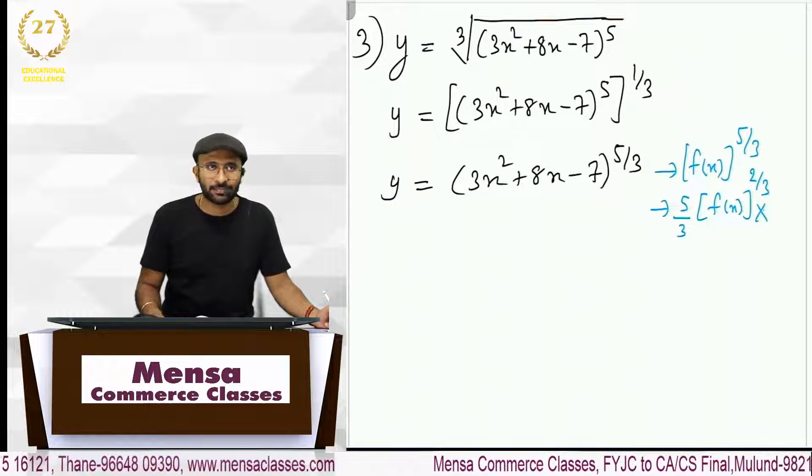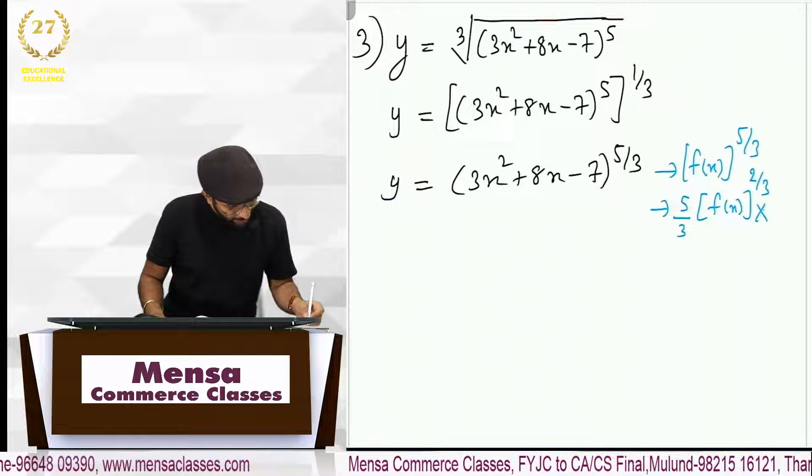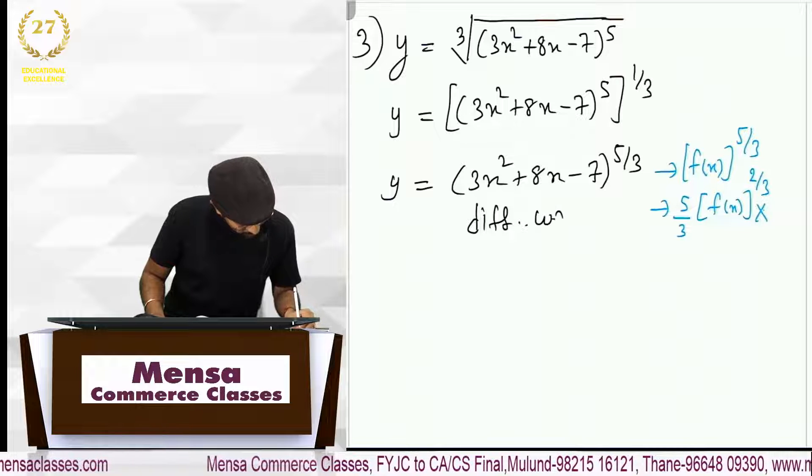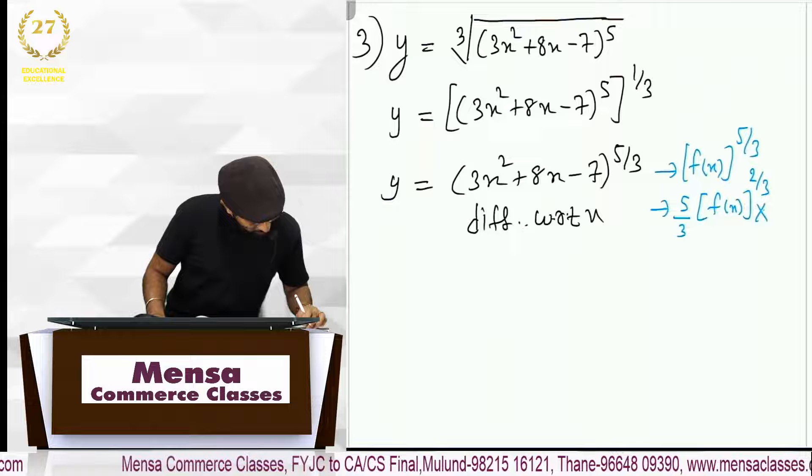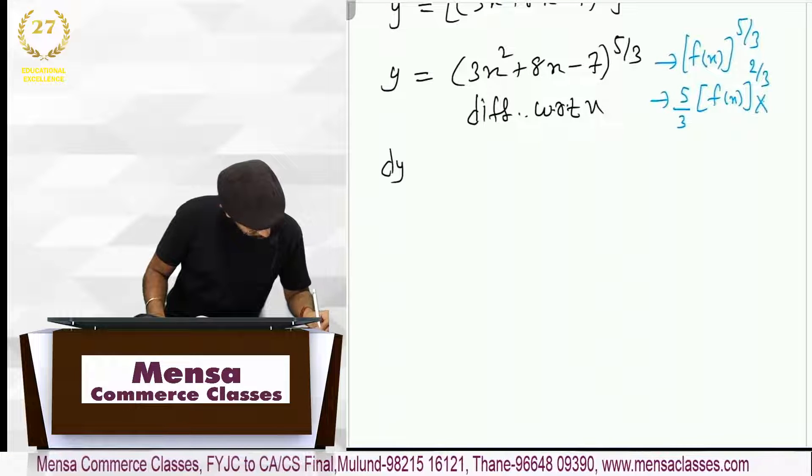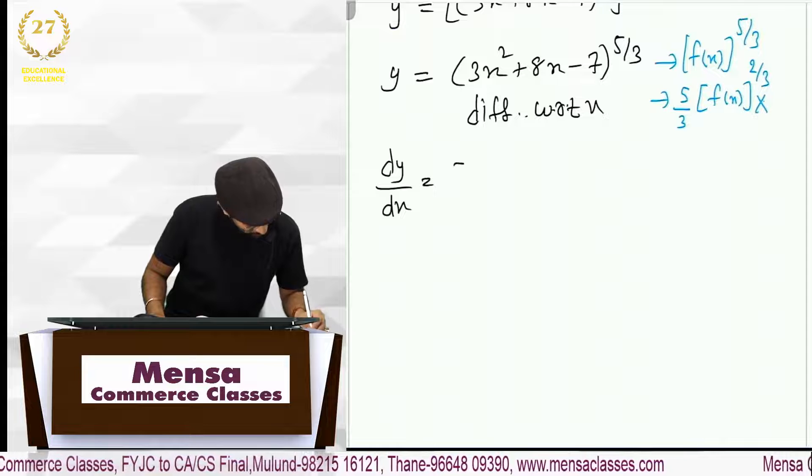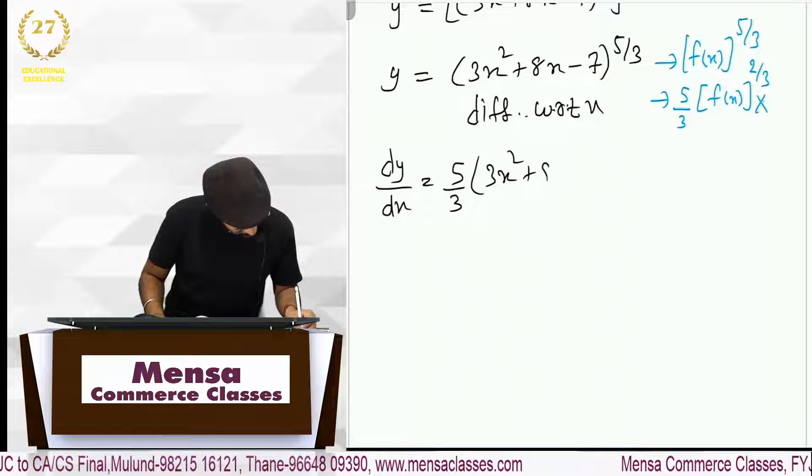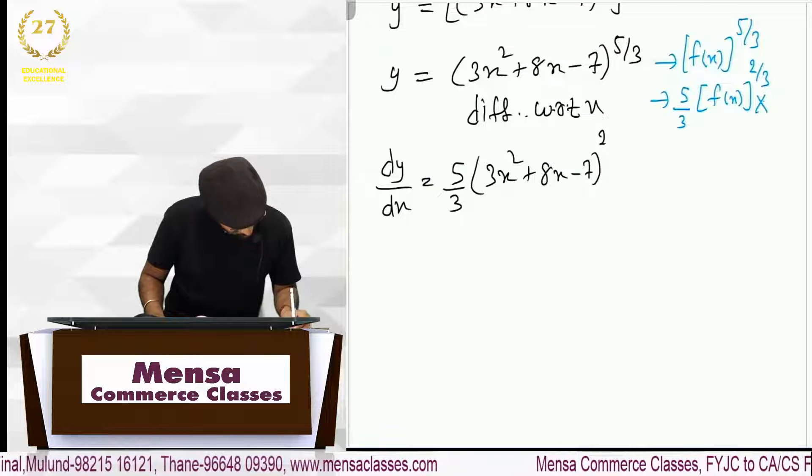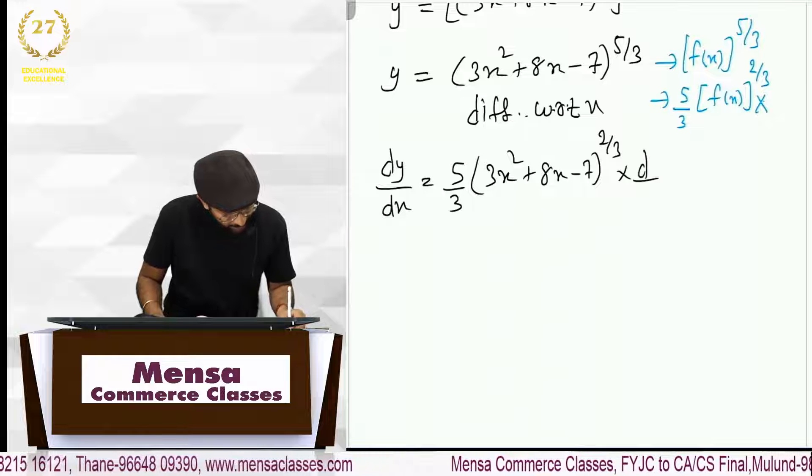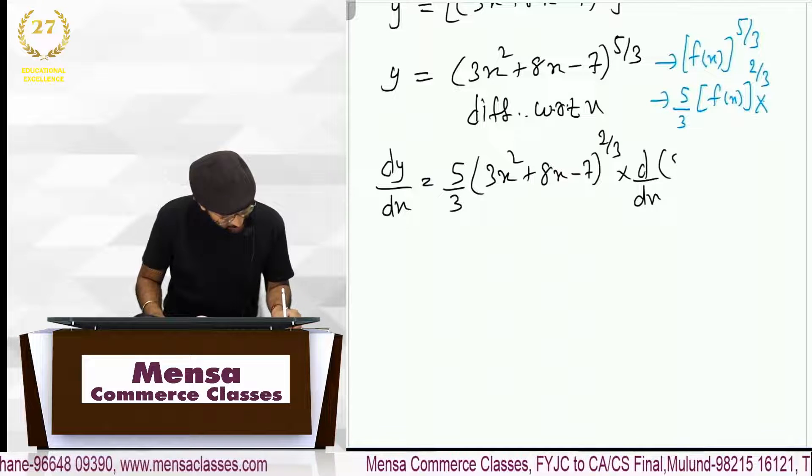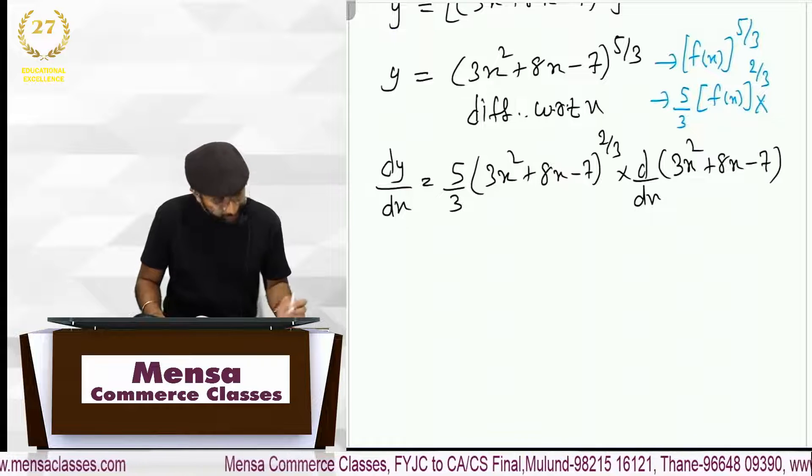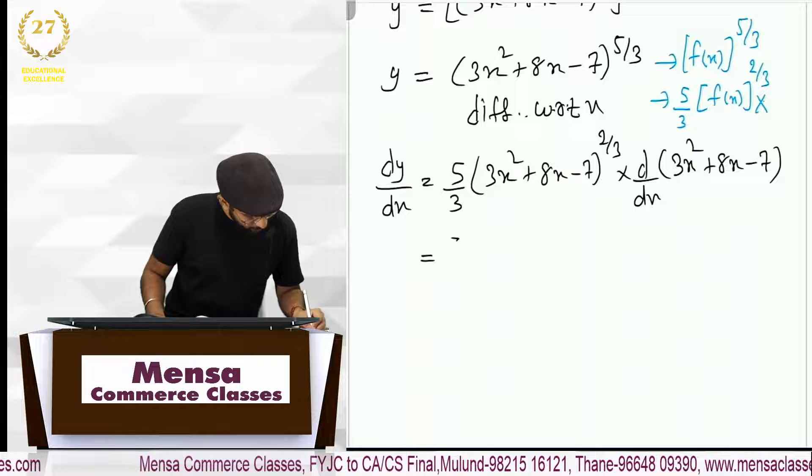Okay so now using that logic when I differentiate with respect to x, dy by dx will be 5 by 3, 3x square plus 8x minus 7 raised to 2 by 3 into derivative of f of x, or कौन f of x, 3x square plus 8x minus 7. So this is equal to 5 by 3.